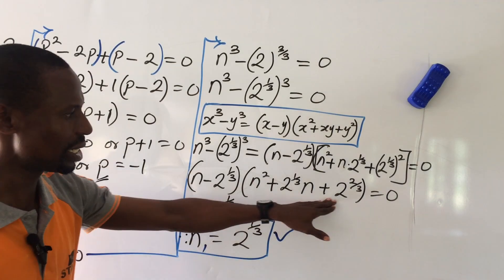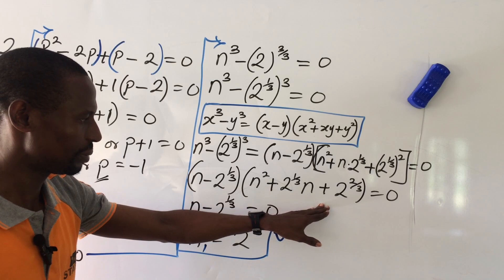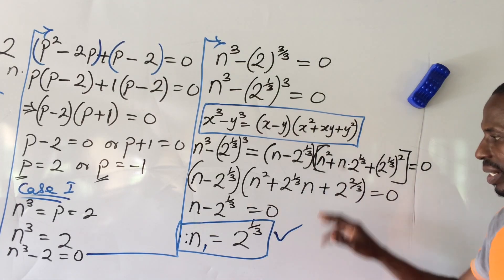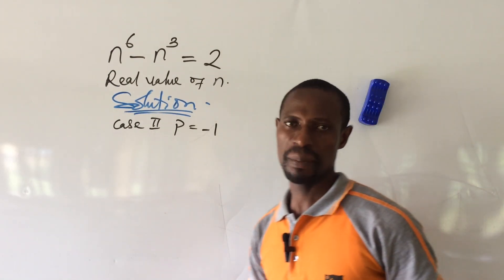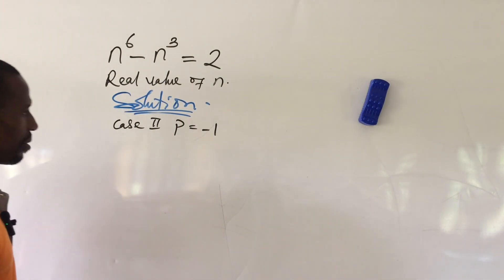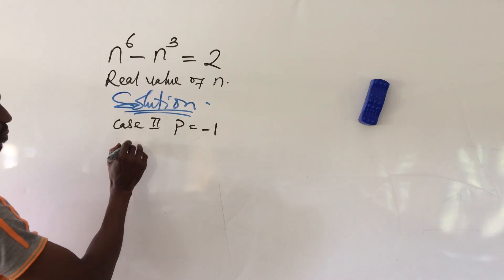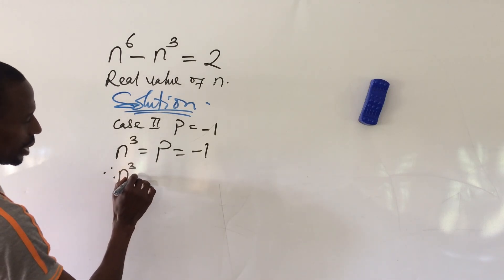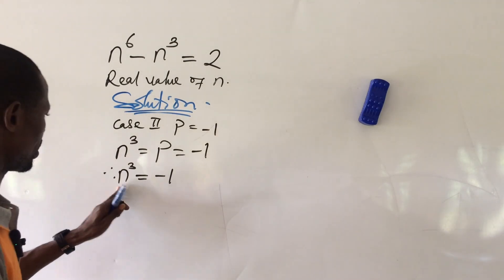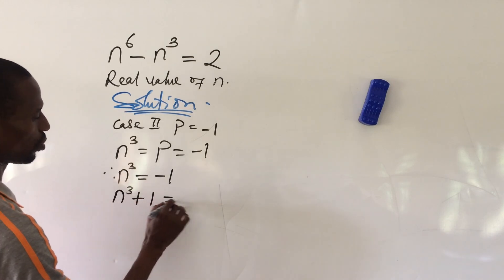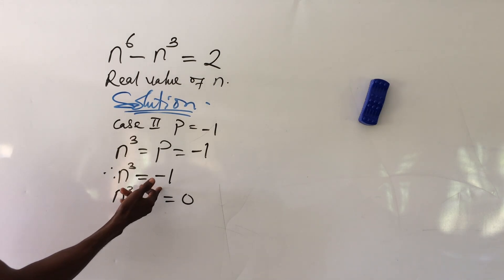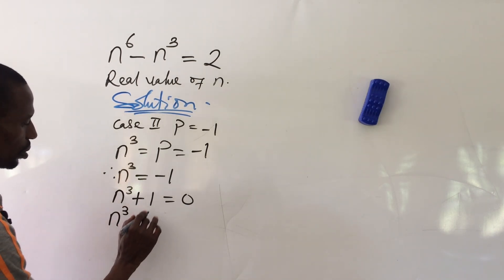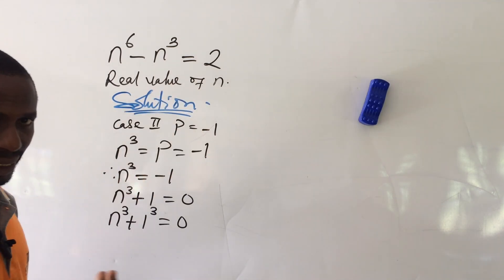Now for case 2, where p equals minus 1. Substituting back, n to the power of 3 equals minus 1. Sending it to the other side, n to the power of 3 plus 1 equals 0. We raise 1 to the power of 3, which still gives 1, so we have n to the power of 3 plus 1 to the power of 3 equals 0.